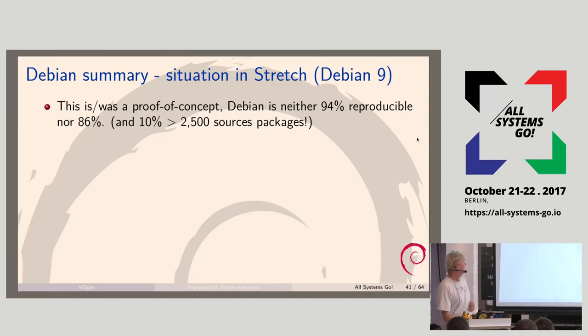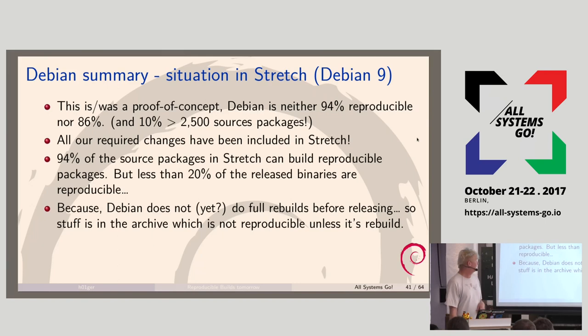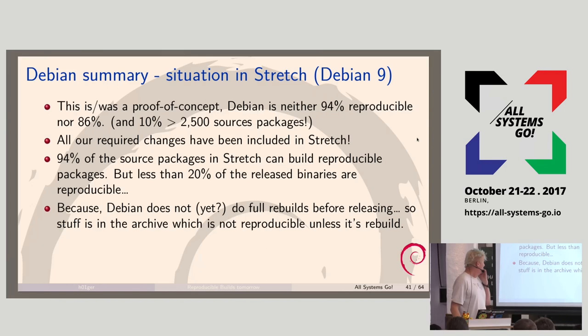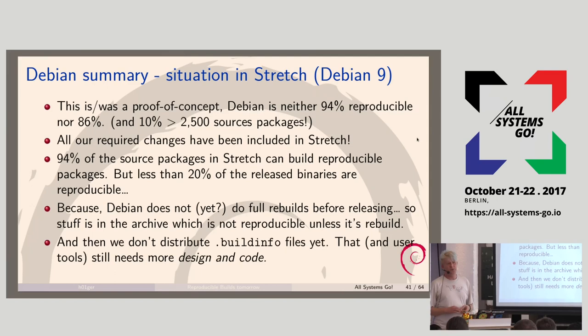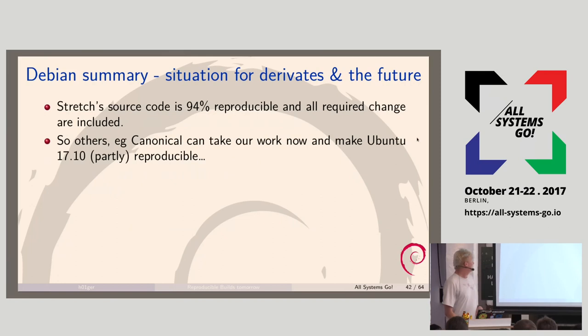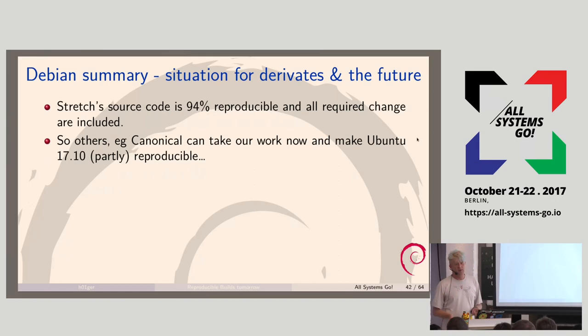The changes are in Stretch and the source code is 94% reproducible. But because of the way Debian releases, we don't do full archive rebuilds — only maybe 20% of the Stretch binaries are reproducible. That's a Debian-specific problem. The other issue is we don't distribute the build info files yet — they are only accessible to Debian developers. We are there theoretically, but not in practice. In practice, other parties like Canonical could take Stretch or unstable, rebuild it, and release an Ubuntu which would be 94% reproducible.